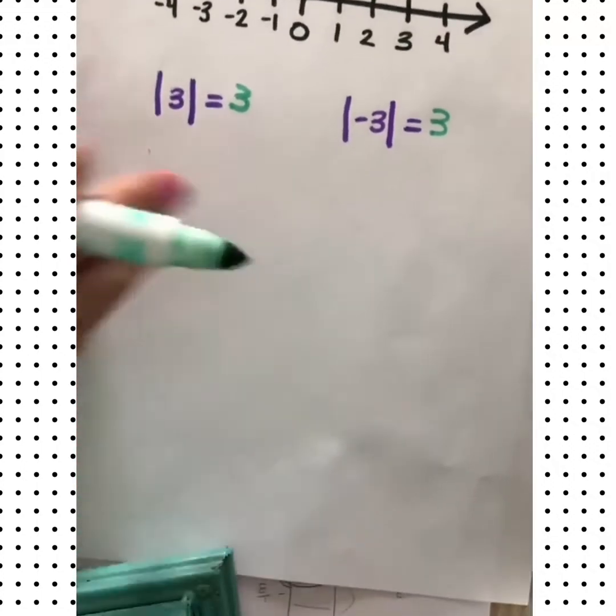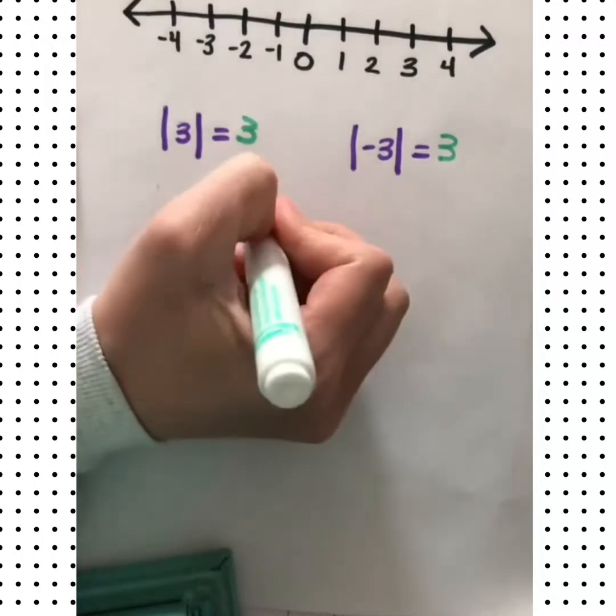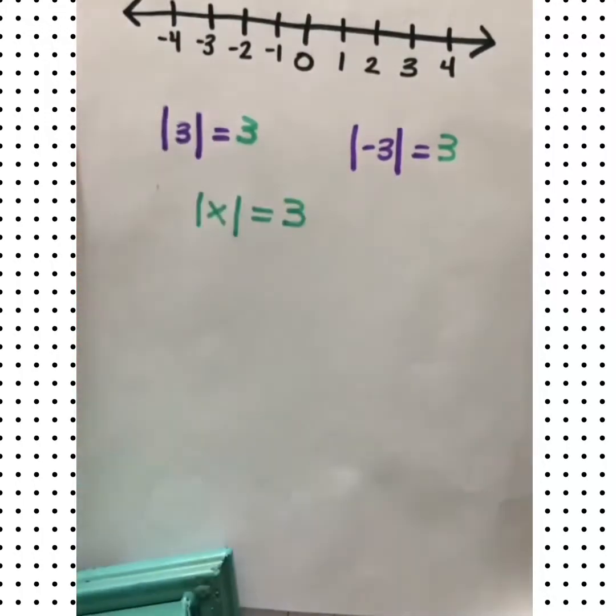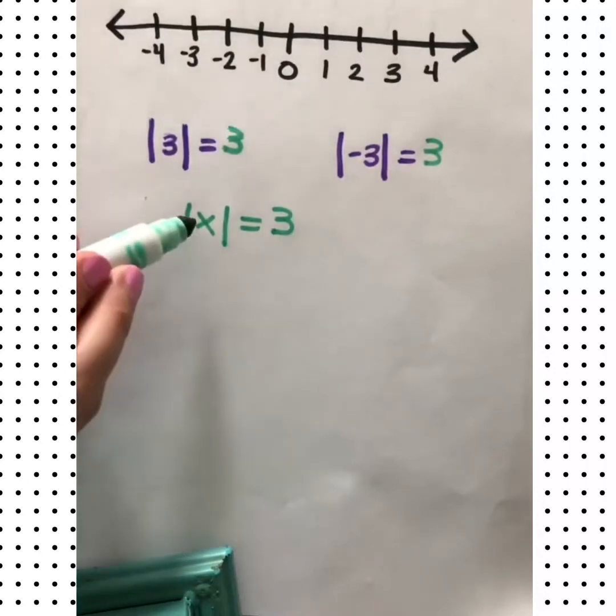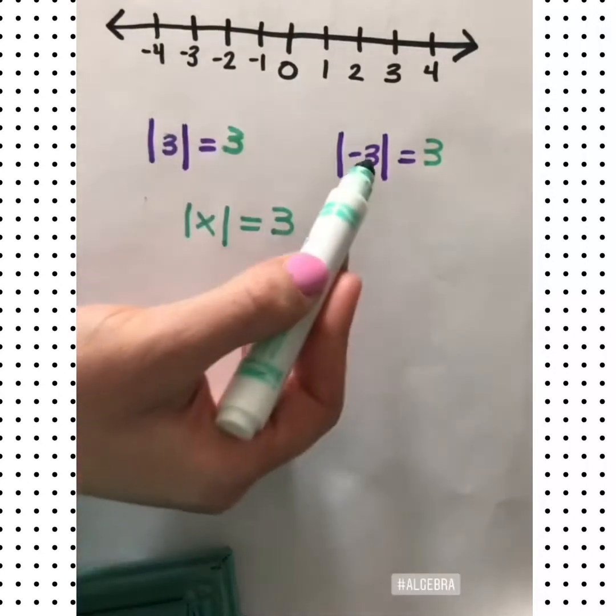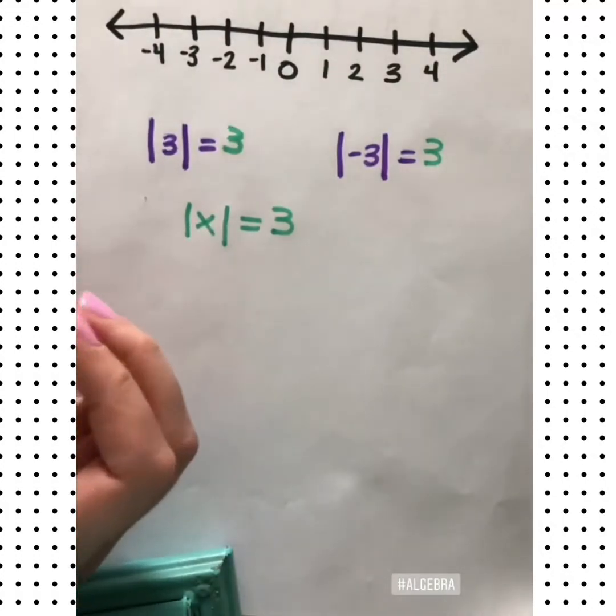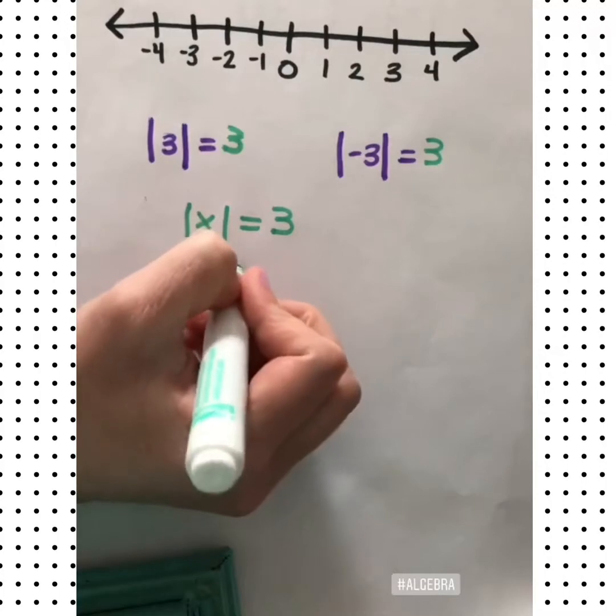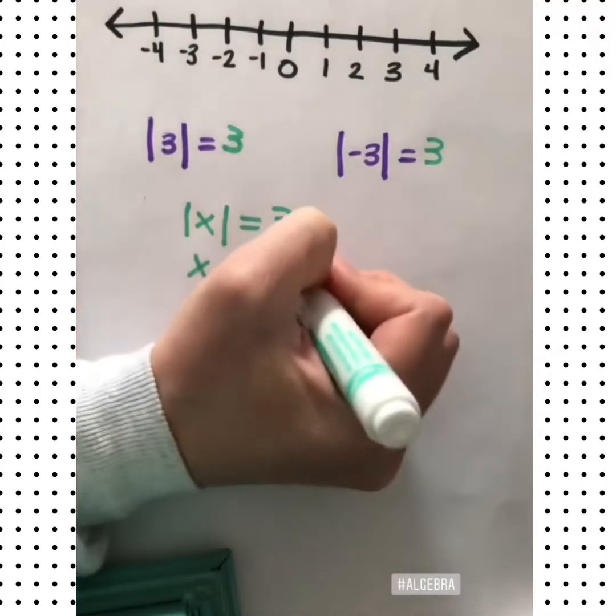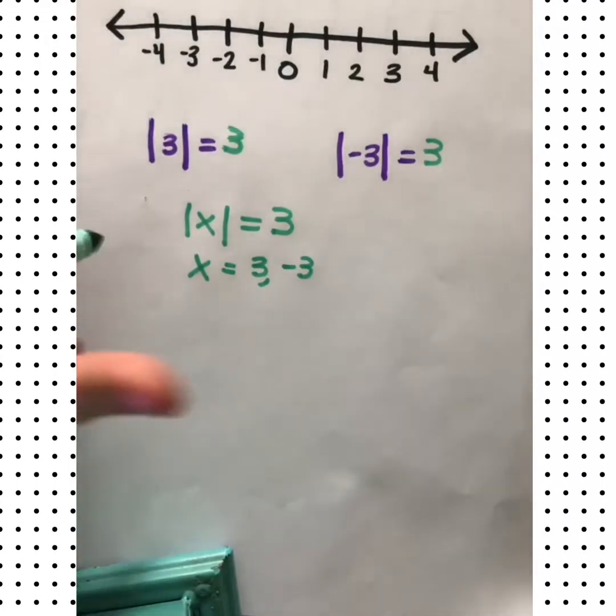When we get to equations, you'll see things that say the absolute value of x equals 3, and you're trying to find the value for x that makes this equation true. So based on what we just did here, we can see that x could have two possible values: x could equal 3 and negative 3. So both of these are solutions. You will typically have two solutions when it comes to absolute value equations.